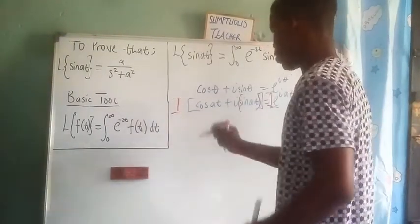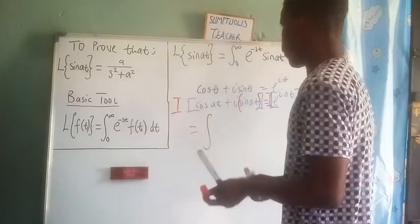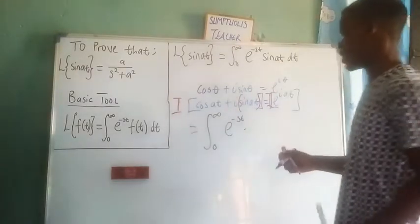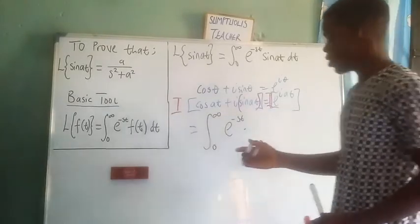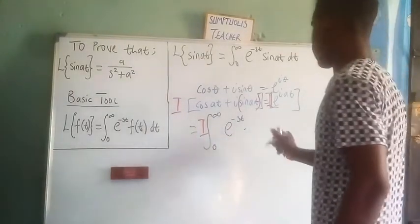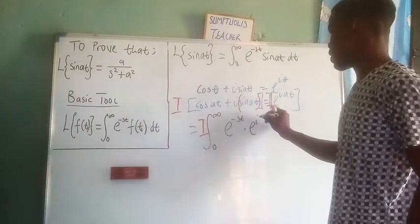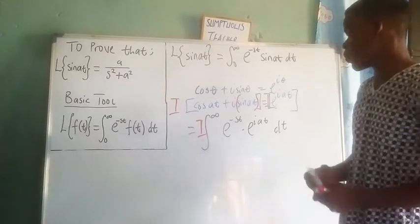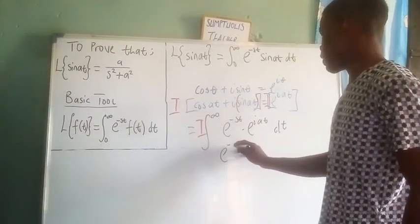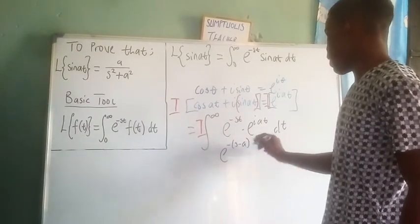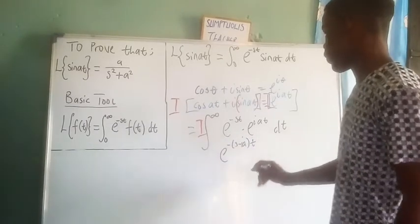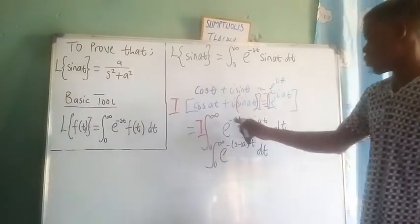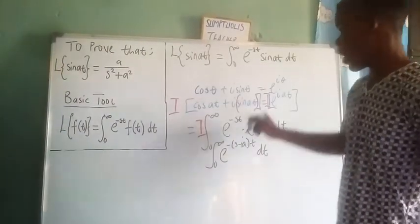Doing that, we have the integral from 0 to infinity of e to the negative st times e to the i·at with respect to t. Since the bases are the same, we add the powers, giving us the integral from 0 to infinity of e to the negative of (s minus ia)·t with respect to t.